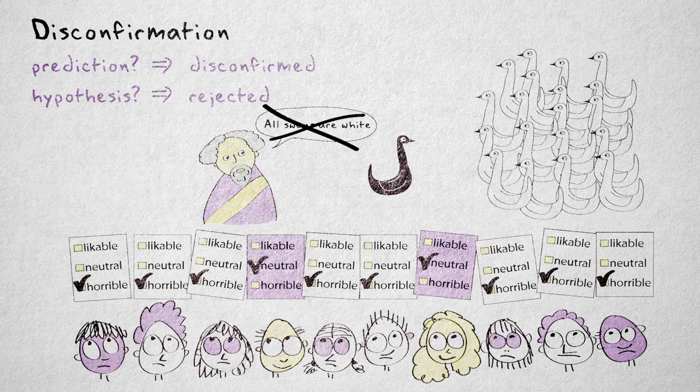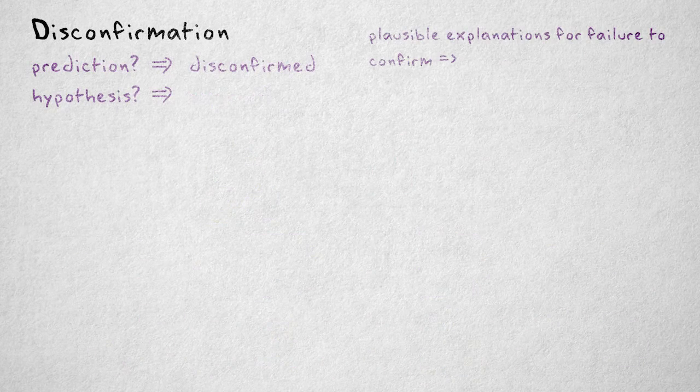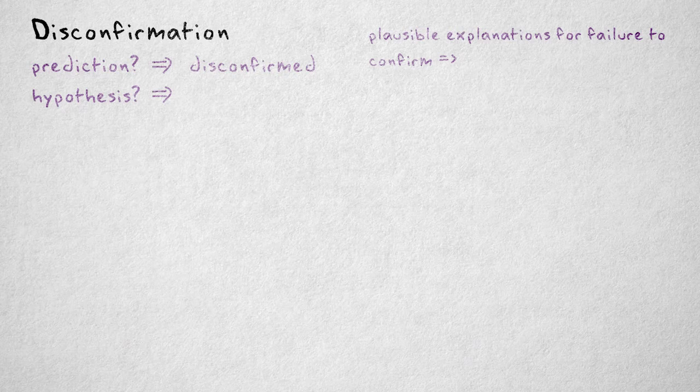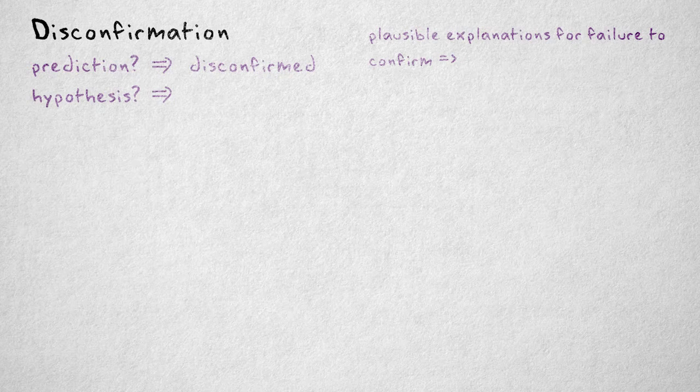In practice, however, especially in the social sciences, there are often plausible alternative explanations for our failure to confirm. These are in fact so easy to find that we rarely reject the hypothesis outright.